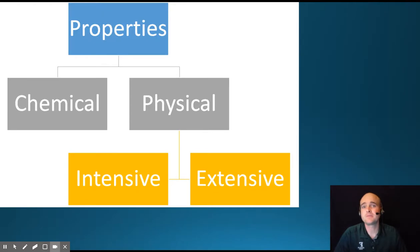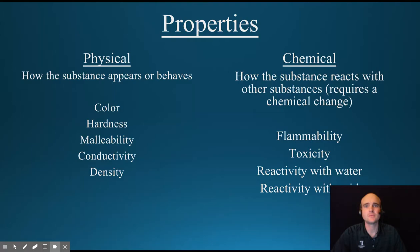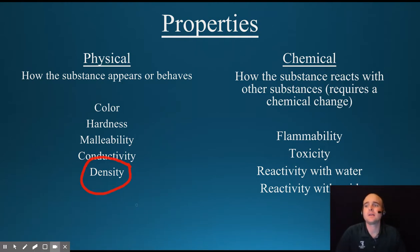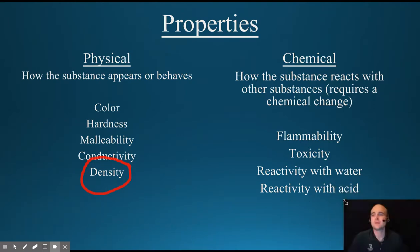Properties can be broken up into two different terms: the chemical property and the physical property. The physical property can also be broken into two subcategories called the intensive property and the extensive property. The physical property is how the substance appears or behaves — like its color, hardness, malleability, conductivity, or density. Most people do not remember that density is actually a physical property. A chemical property is how the substance reacts with other substances, such as flammability, toxicity, reactivity with water, or reactivity with acid. Physical properties are how it behaves by itself and chemical properties are how it behaves with other chemicals.